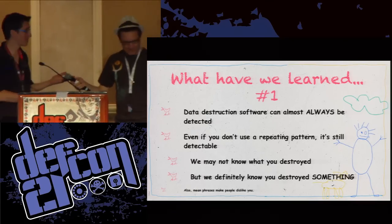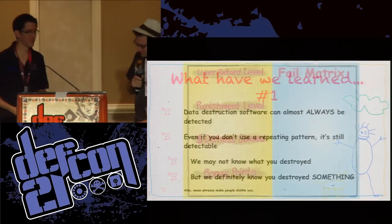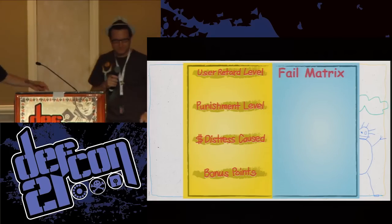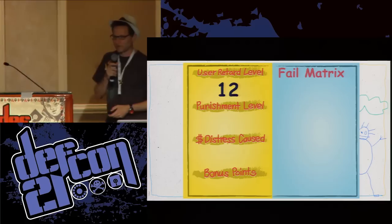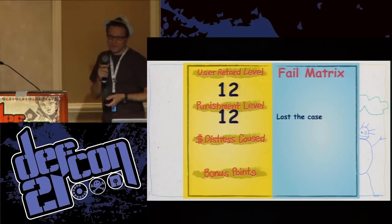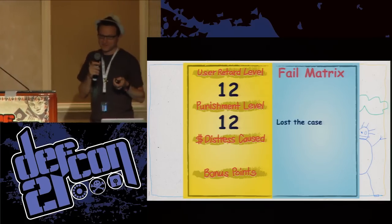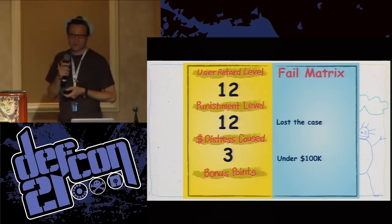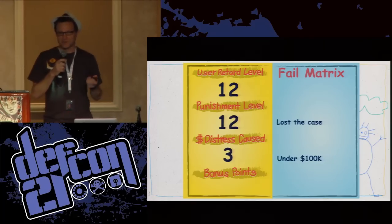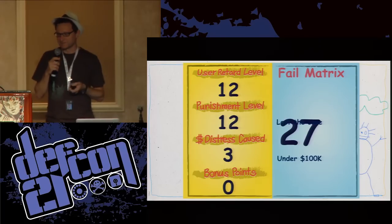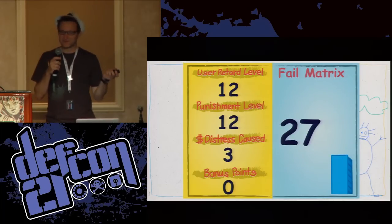What about the fail matrix? User retard level: 12 — pretty retarded. The guy lost the case, he got sued. Under $100,000, so not a huge amount of economic distress. No bonus points here because it just wasn't that good. So he gets 27 total fail points.